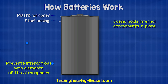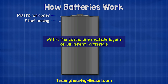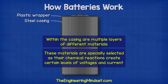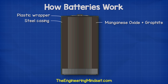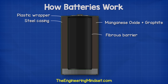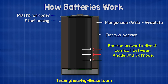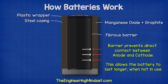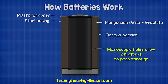Under the wrapper we find the main casing, which is usually made from steel with a nickel plating. This holds all the internal components in place and stops them from interacting with elements of the atmosphere such as air and water. Within the casing we have multiple layers of different materials, specially selected because their chemical reactions create certain levels of voltage and current. The first layer is the cathode, which is a mixture of manganese oxide and graphite. The graphite is added to improve conductivity and increase energy density. Next we find a layer of porous material, typically a fibrous paper, which forms a barrier. This barrier prevents the anode and cathode materials from having direct contact, helping the battery last longer when not in use — without it the battery would short circuit. The microscopic holes within the material allow ions to pass through.